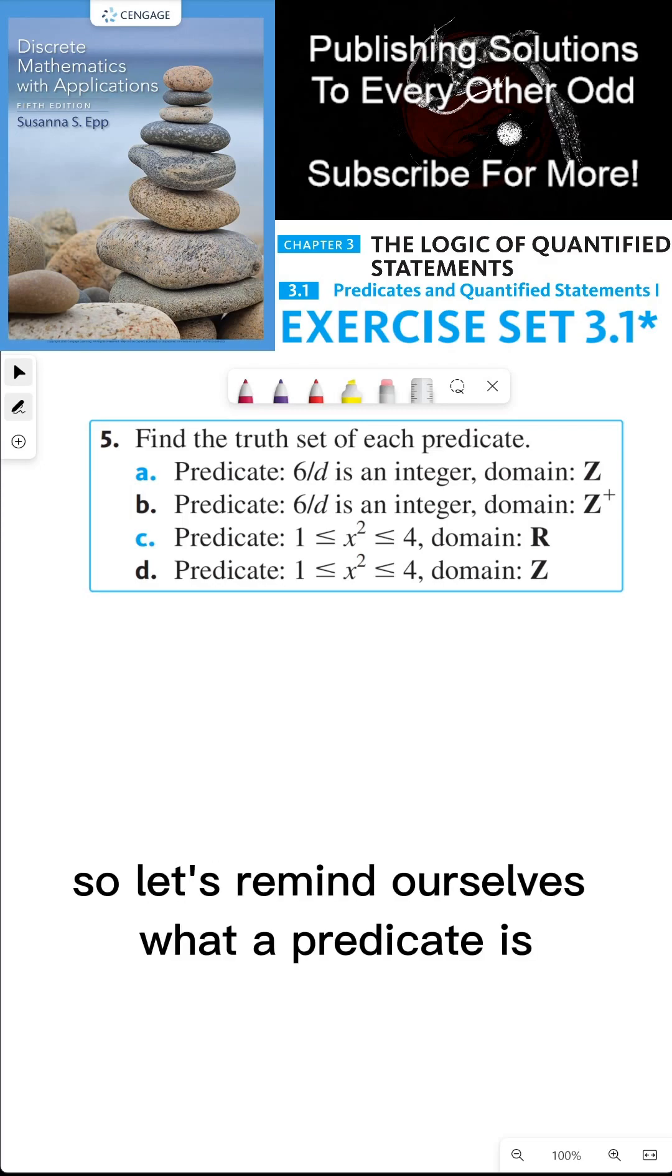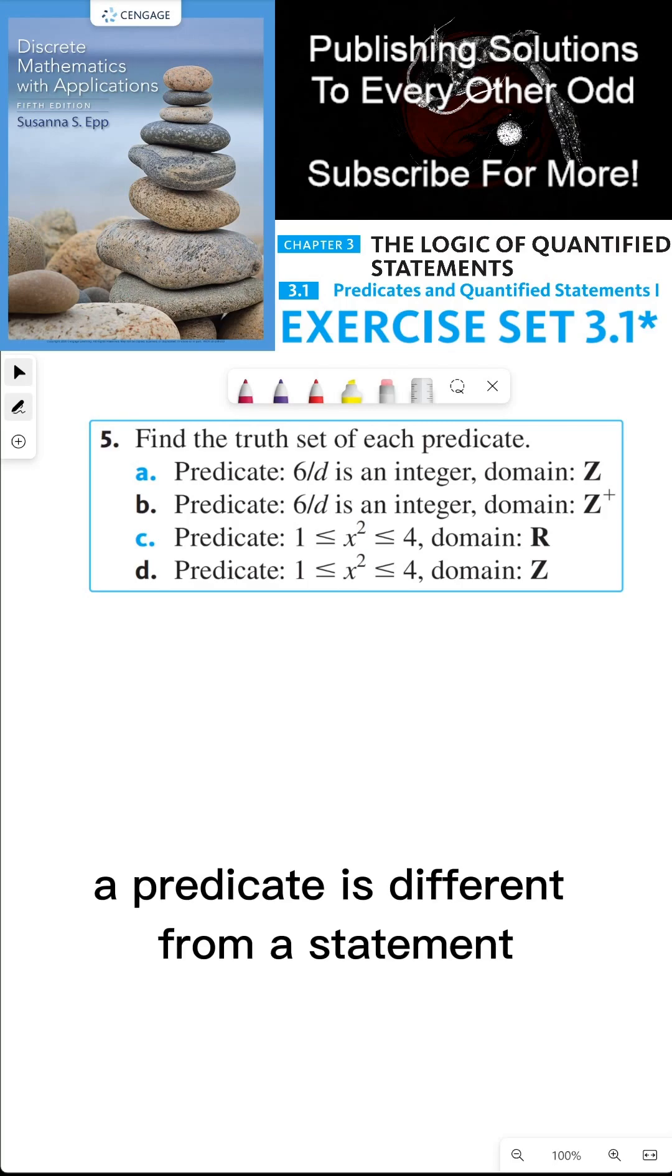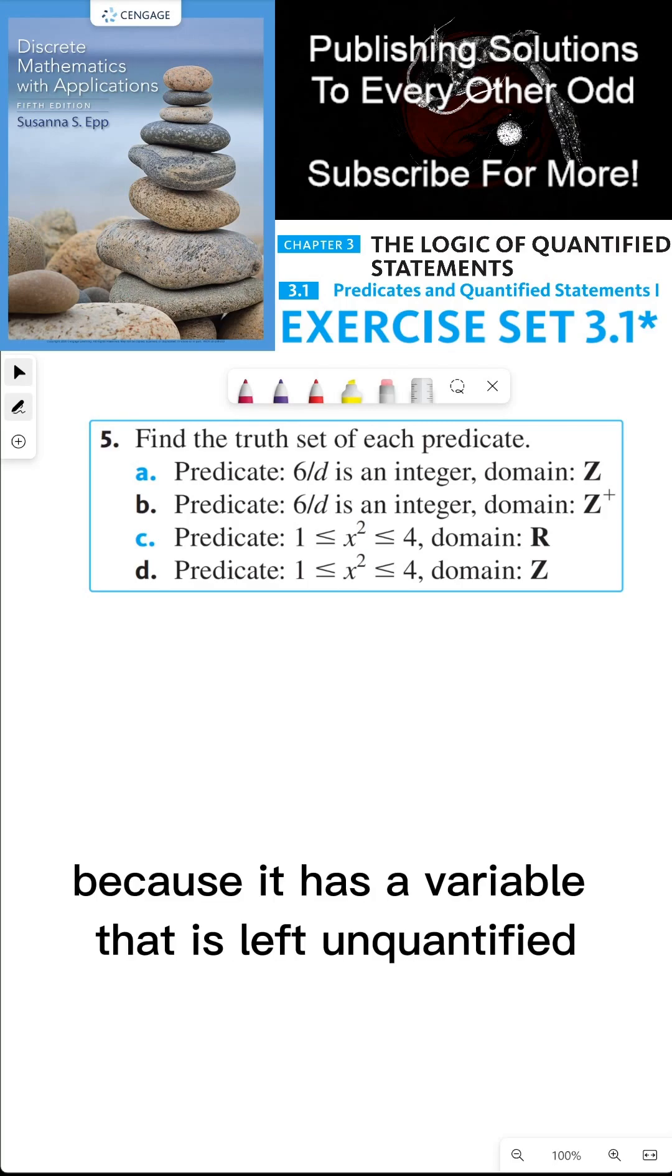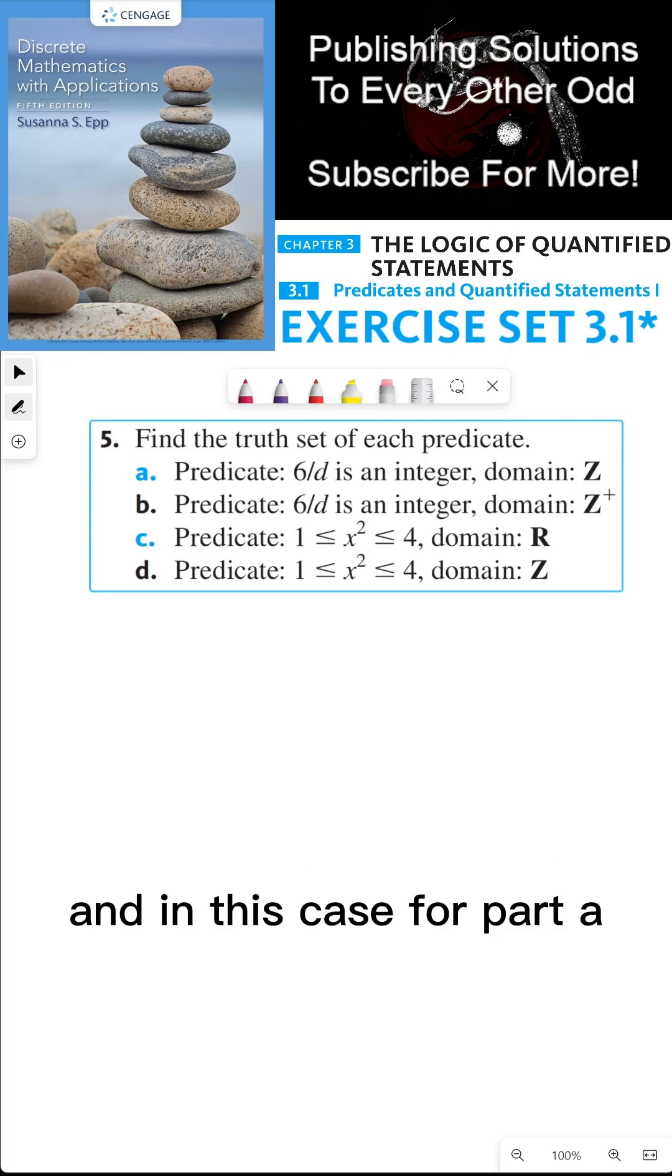So let's remind ourselves what a predicate is. A predicate is different from a statement because it has a variable that is left unquantified. And in this case, for part A, that variable is D.